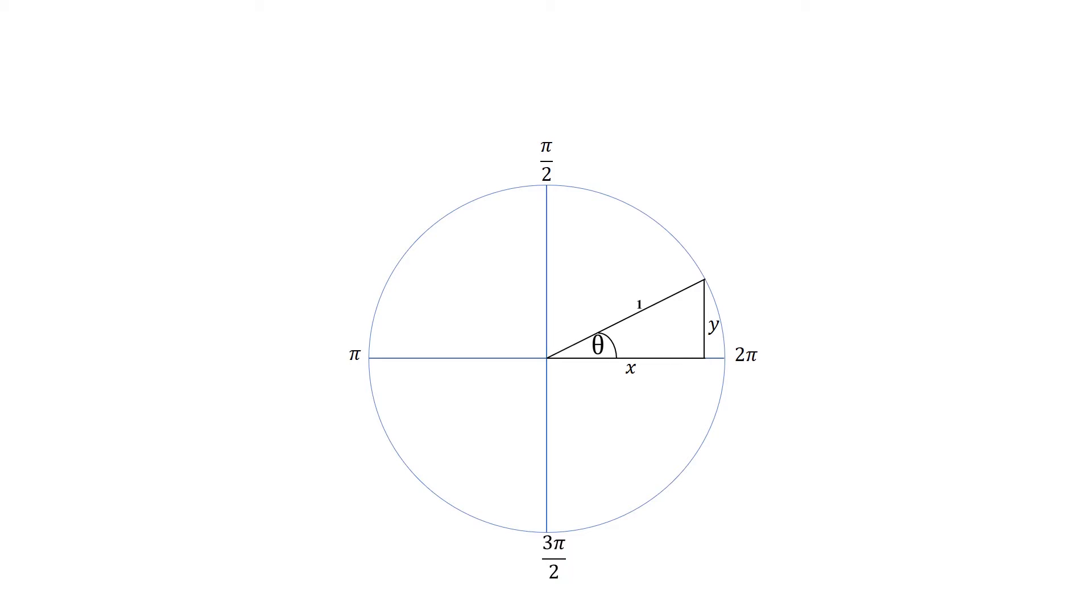So it has radius one so we basically draw a triangle on the inside as you can see in the diagram. We split our triangle up into its vertical and horizontal component with the vertical being y and the horizontal being x and these are the distances.